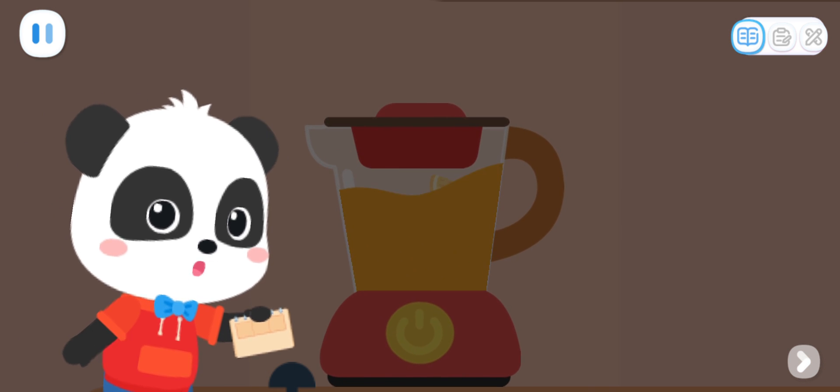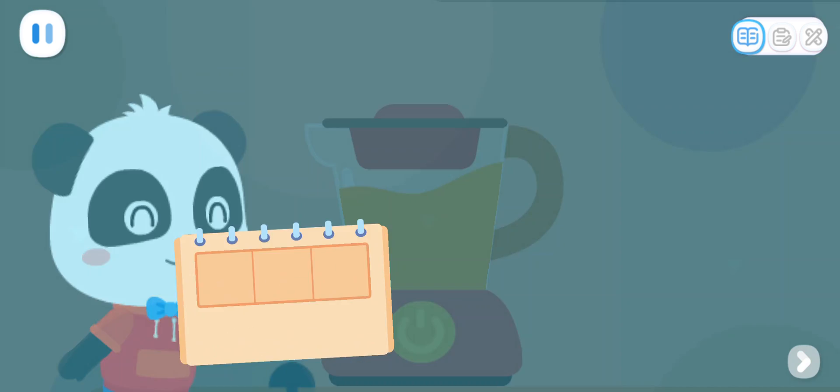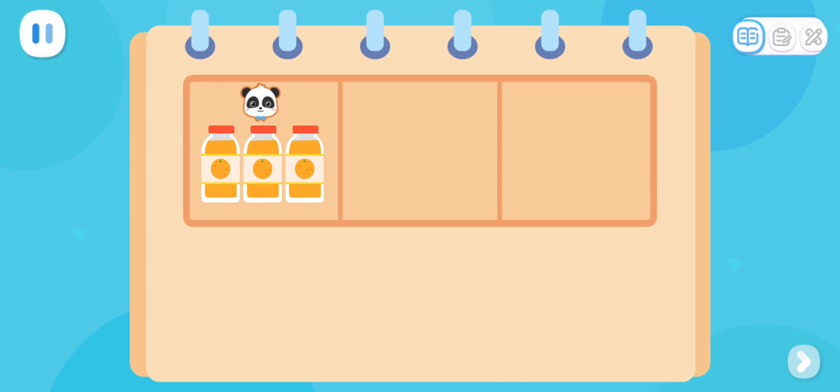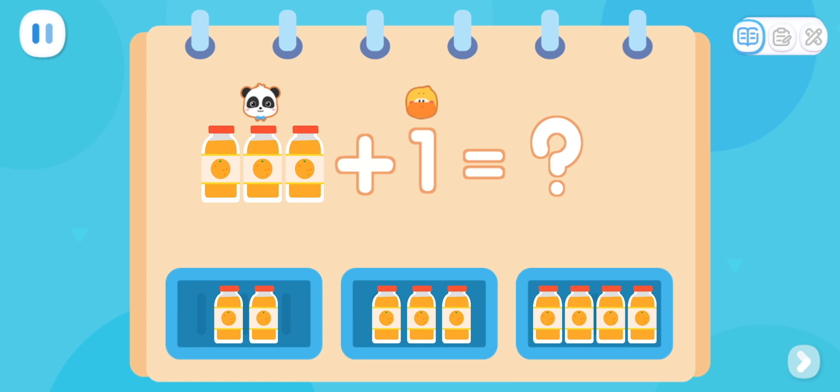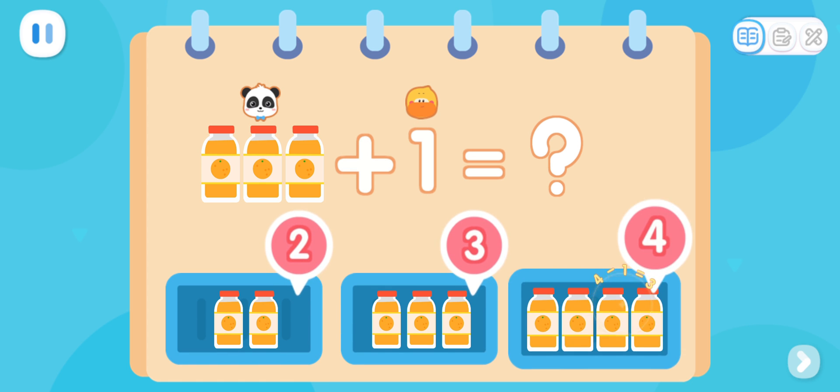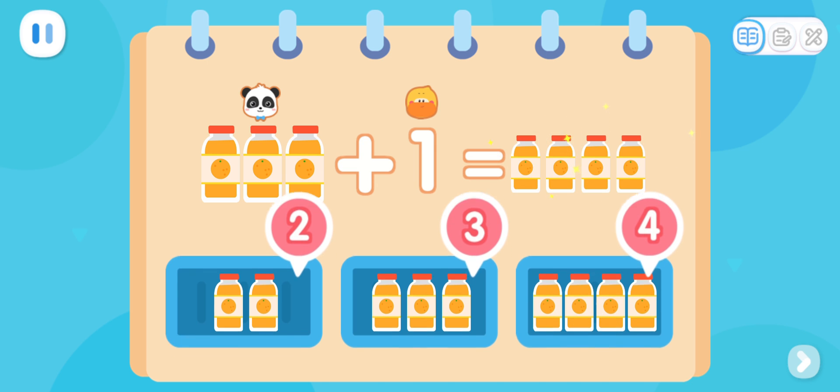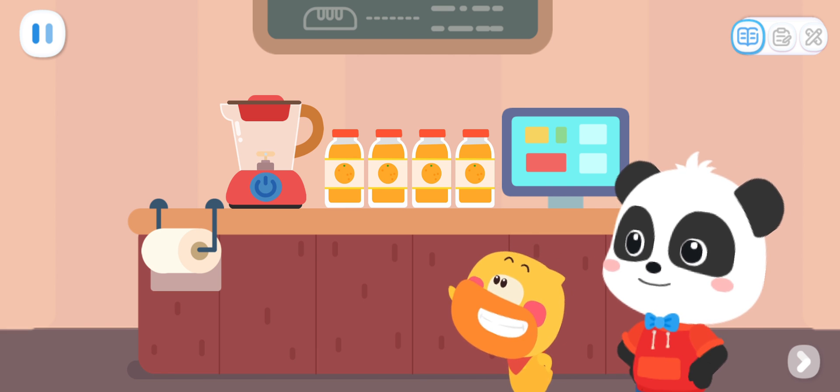Quacky, let's count how many bottles of orange juice there are. Kiki has made three bottles of orange juice. One bottle of juice is currently being squeezed. How many bottles of juice are there in total? Great! The fresh juice is ready!